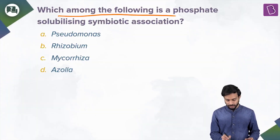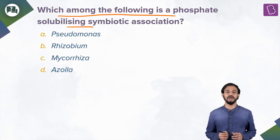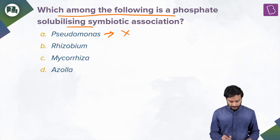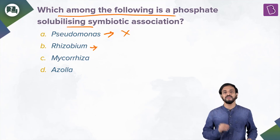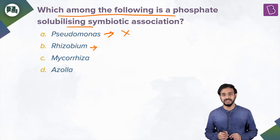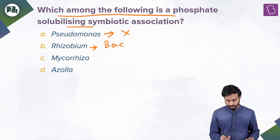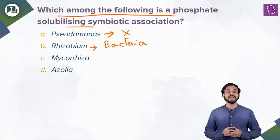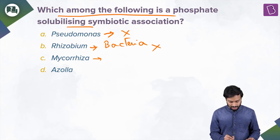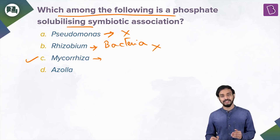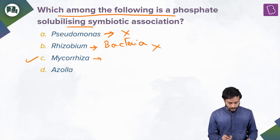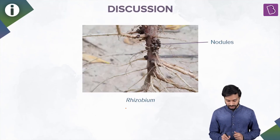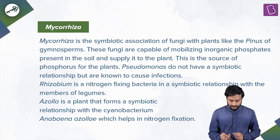Which among the following is a phosphate solubilizing symbiotic association? Options: Pseudomonas — incorrect, does not show symbiotic relationship but is known to cause infection. Rhizobium — nitrogen fixing bacteria that show symbiotic relationship with leguminous plants, converting atmospheric nitrogen into nitrates and nitrites; incorrect here. Mycorrhiza — correct answer. Azolla — a plant forming symbiotic relationship with cyanobacterium; incorrect.